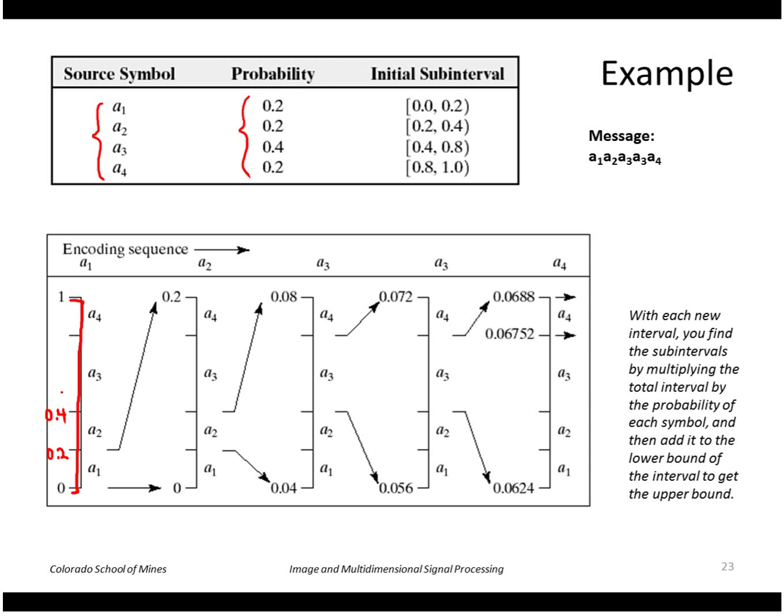a3 will go from 0.4 to 0.8 and a4 will go from 0.8 to 1.0. So if we start off with a message that has an a1 as the first element, that means our code word will be somewhere in this interval of 0 to 0.2.